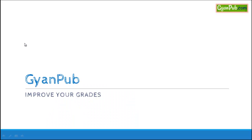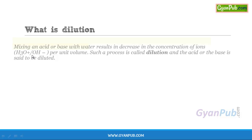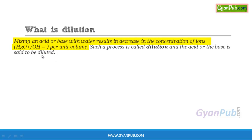Let us discuss about dilution. What is dilution? Mixing of acid with water or base with water results in decrease in concentration of H⁺ ions and OH⁻ ions per unit volume. Such a process of mixing of acid with water or base with water is called dilution, and the acid or base which is mixed with water is said to be diluted.